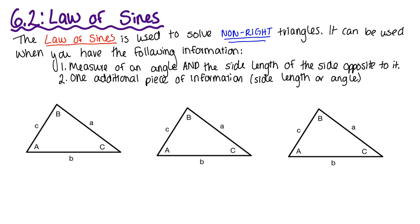Section 6.2, law of sines. We spent a lot of time talking about right triangles, but it is time to talk about non-right triangles. With non-right triangles, you can no longer use the Pythagorean theorem. So we need new laws. There are two we're going to talk about: law of sines and law of cosines. Law of cosines is the next section, and they're used in different scenarios.